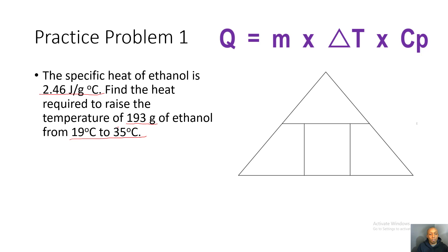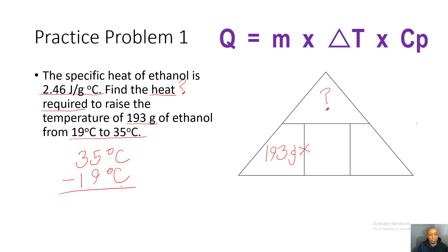We're solving for heat energy Q. Mass is 193 grams. Change in temperature is final minus initial: 35 degrees Celsius minus 19 degrees Celsius equals 16 degrees Celsius. Specific heat is 2.46 joules per grams degrees Celsius.